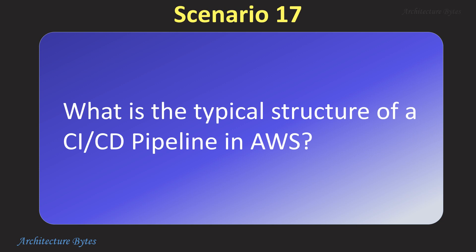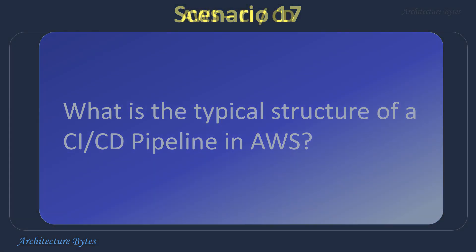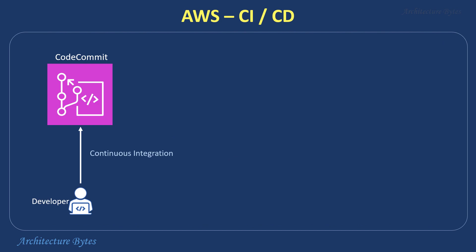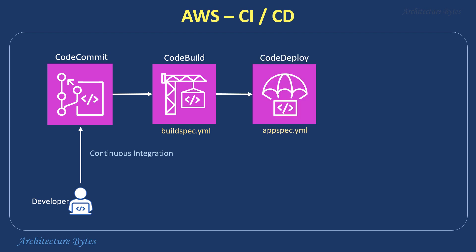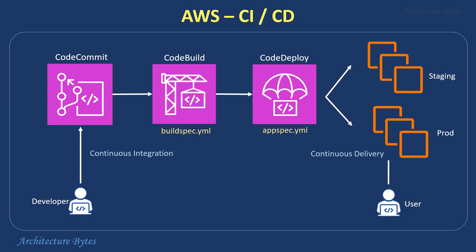What is the typical structure of a CI/CD pipeline in AWS? A typical CI/CD pipeline uses a combination of services to streamline the development and release process. A developer commits code to CodeCommit. CodeBuild automatically triggers a build process, compiles your code, runs tests, and produces deployment-ready packages. CodeDeploy then takes over, deploying the build packages to your chosen target for running your application.